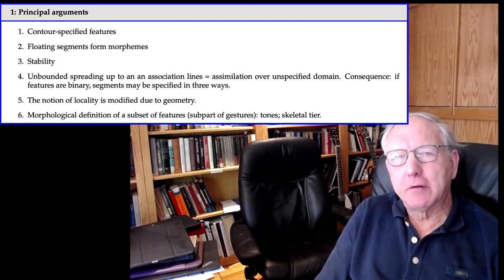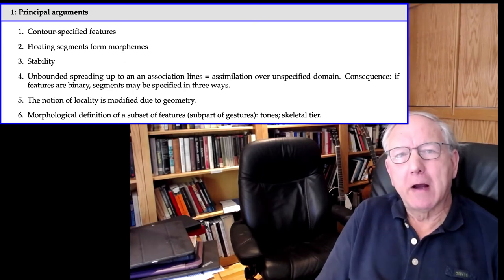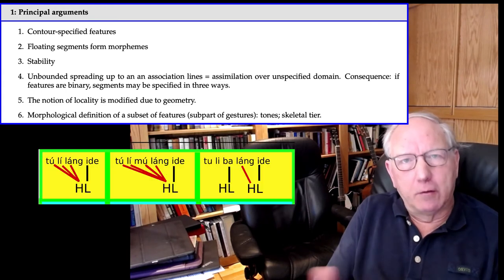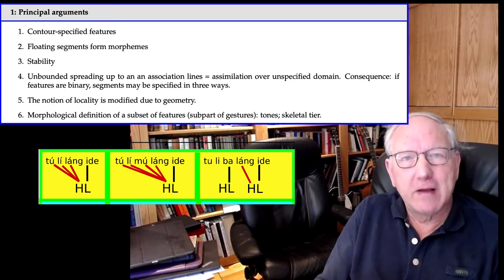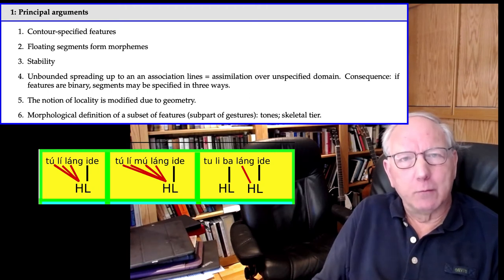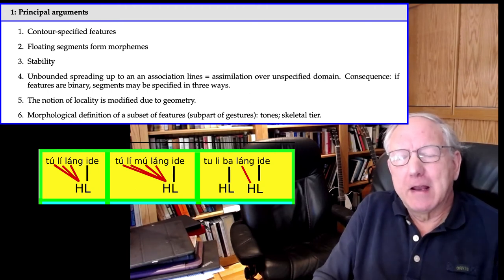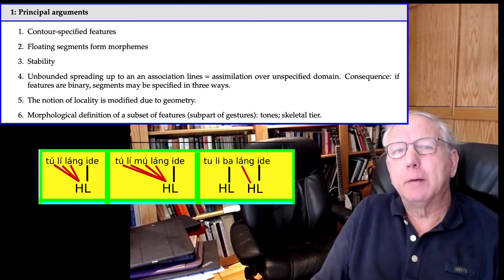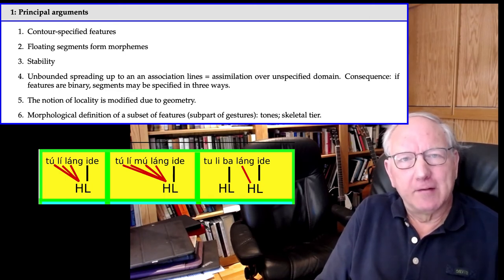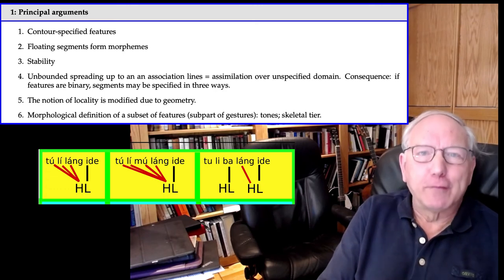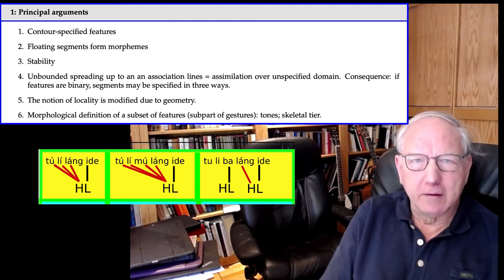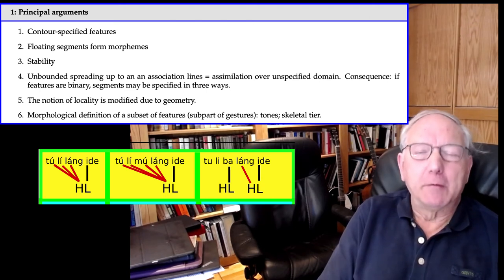The fourth argument is directly connected to the well-formedness condition. We find in tone languages very often a phenomenon whereby the tone logically associated with a particular morpheme spreads either to the left or to the right in an unbounded fashion, up to but not including the next vowel that's associated with a tone. We can see this kind of expansion of a tonal domain as an opportunity offered to the representation: vowels that were not associated with any tone become associated with a tone.